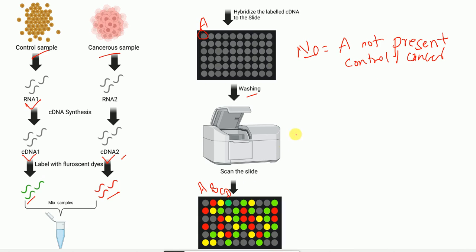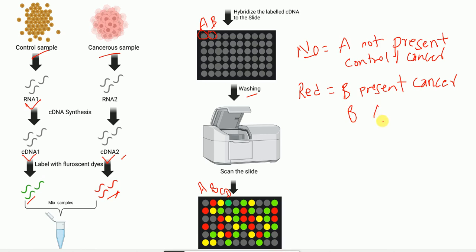What does the red color mean? The red spot corresponds to a spot with a sequence complementary to gene B. Red color means that only the cDNA from the cancer sample bound to it, but not the cDNA from the control sample. Since the cancer sample cDNA is labeled with red fluorescent dye, we see red. This means gene B is present and expressed in the cancer sample, but absent or not expressed in the control sample.